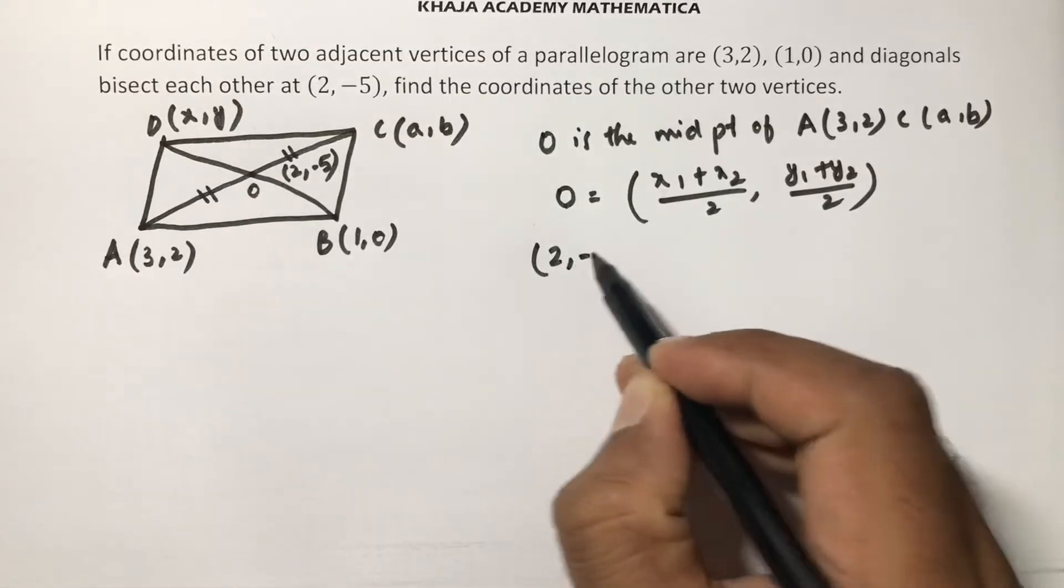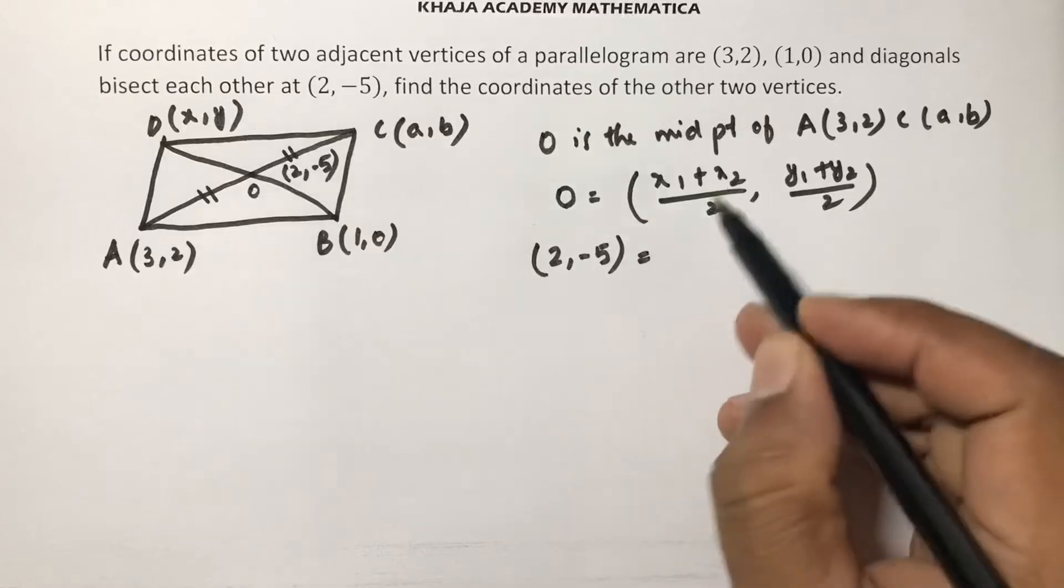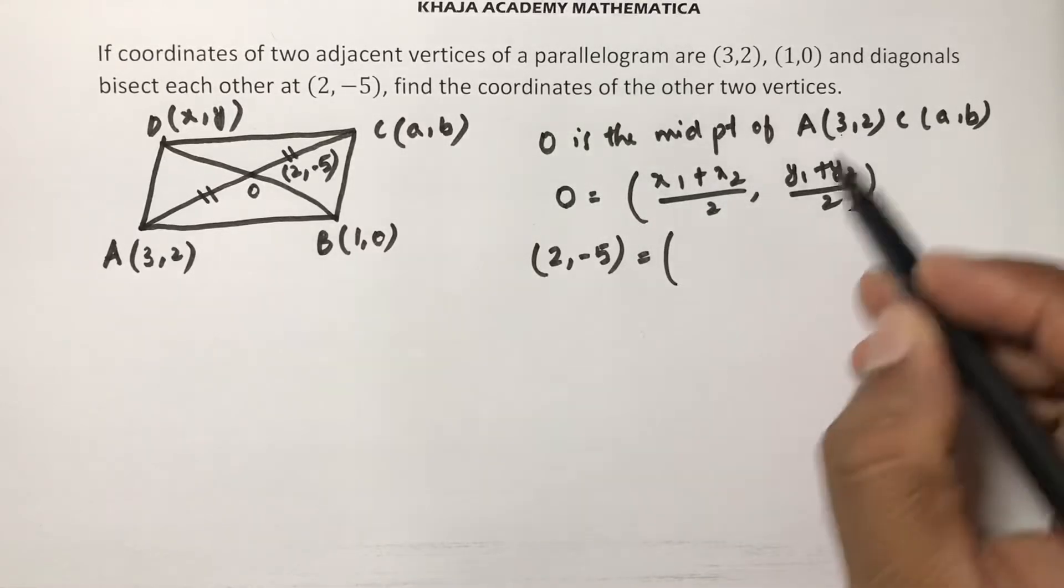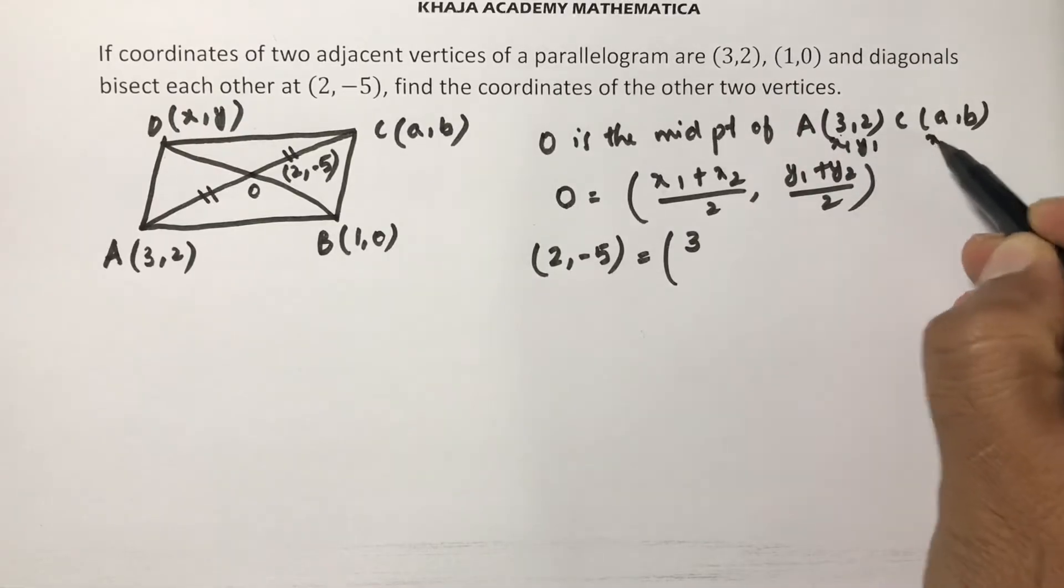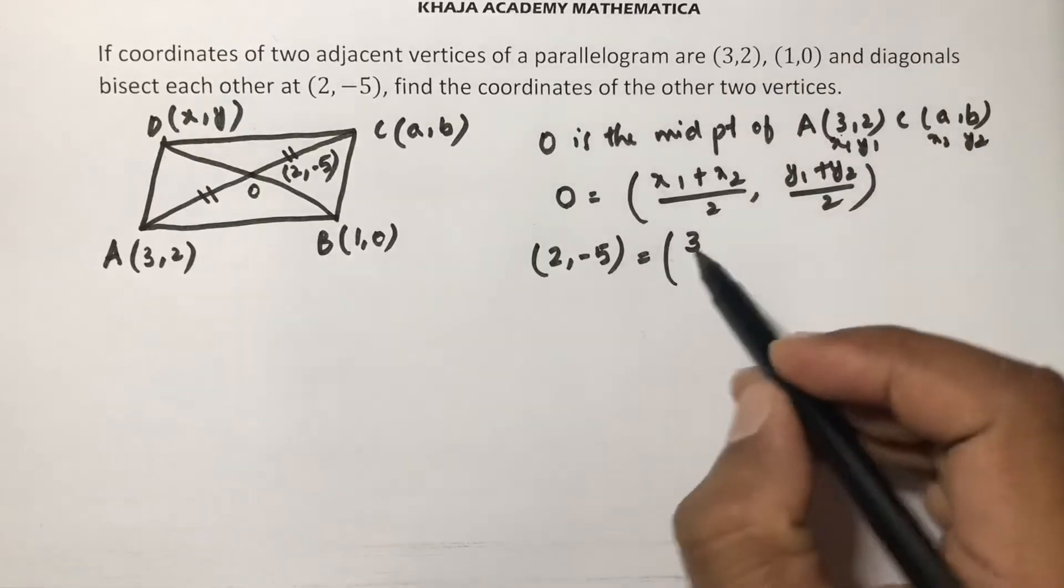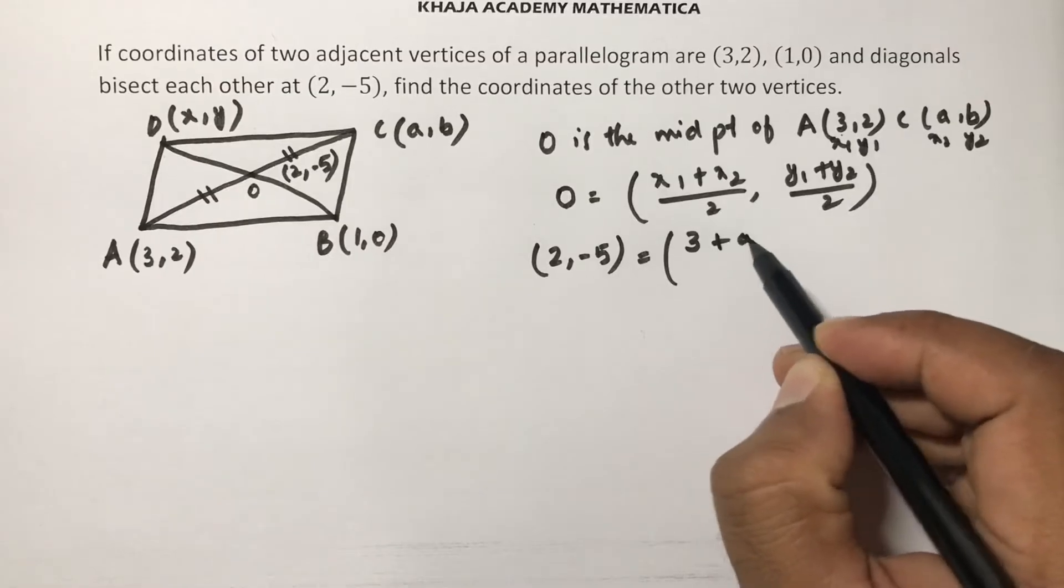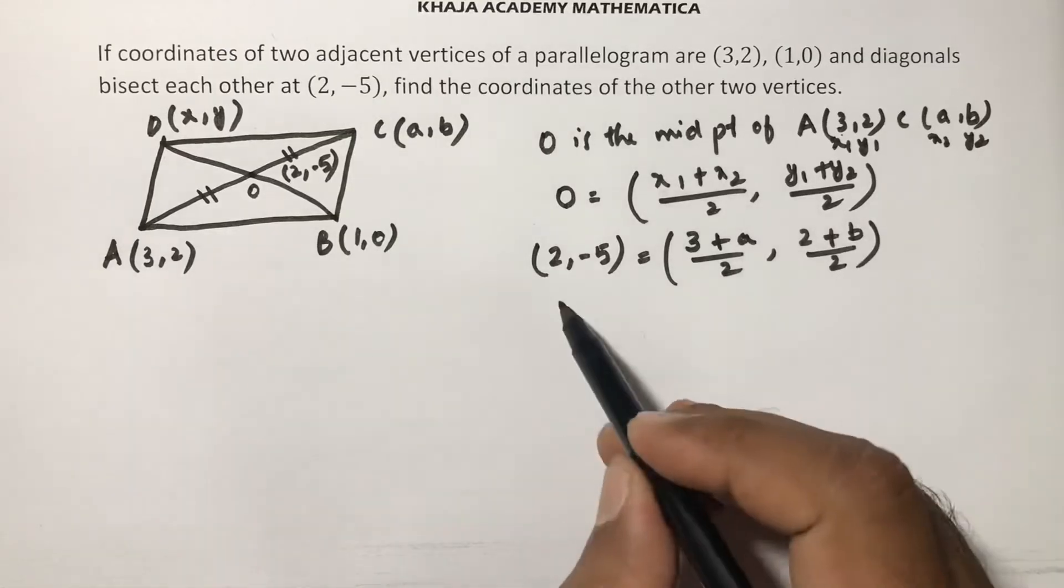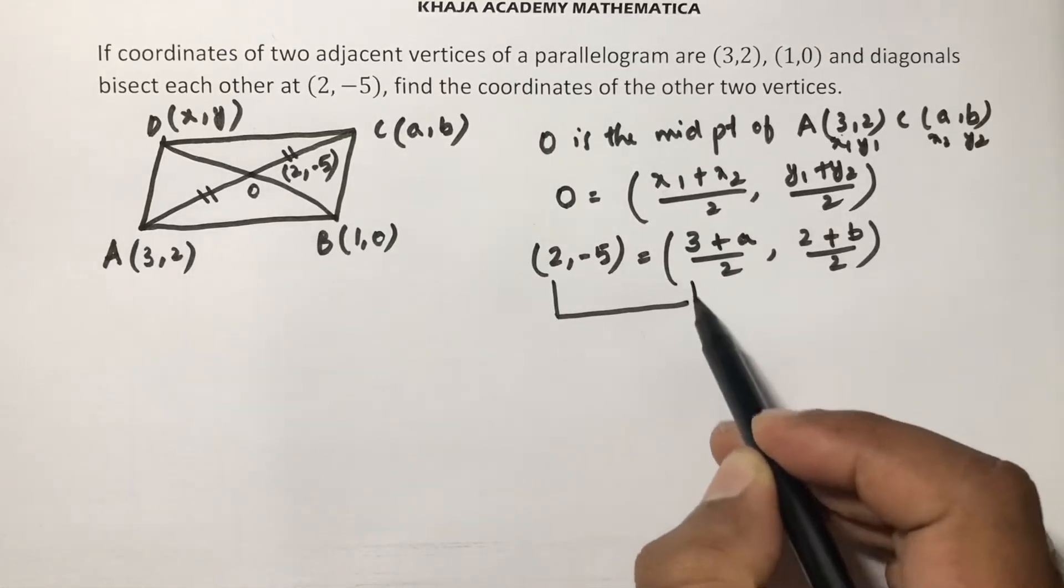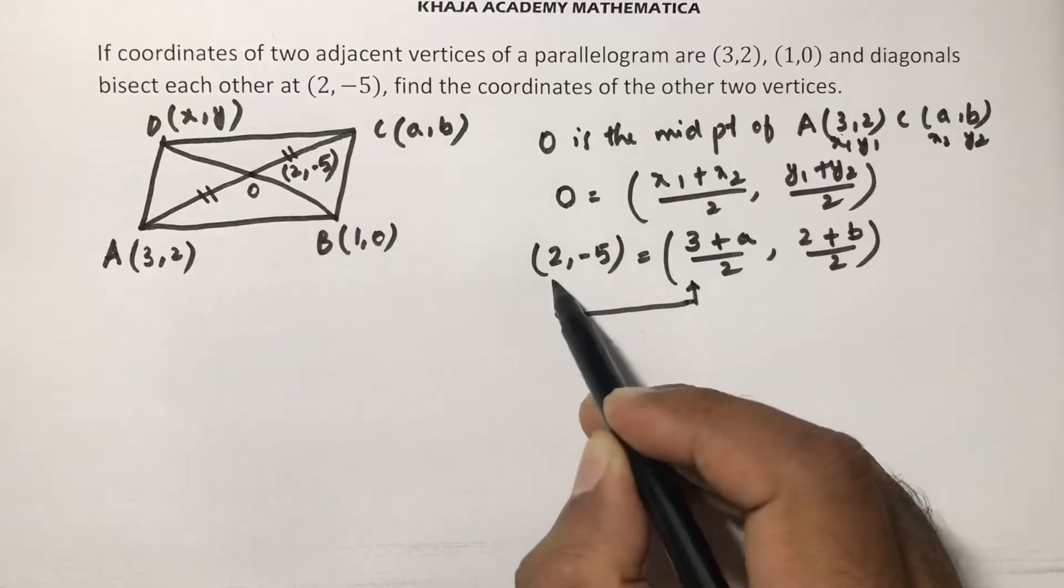So O value is like (2,-5), and substitute x₁=3, x₂=a. This you can consider x₁, y₁, x₂, y₂. So (3+a)/2, (2+b)/2. Now equate abscissa with abscissa and ordinate with ordinate.